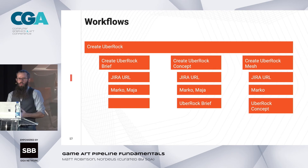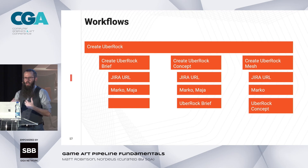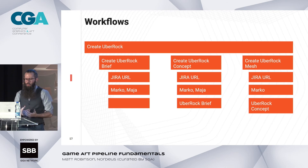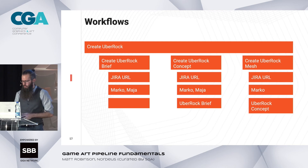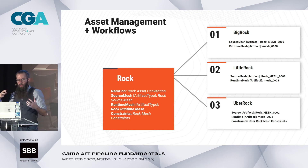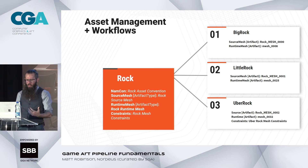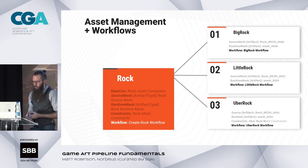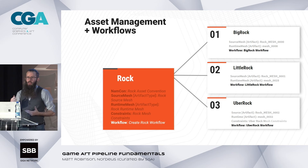Here's how we would create the uber rock. We say 'I want a new asset, it's going to be called uber rock.' All of this stuff gets created automatically because we know the workflow. In this case, Marco and Maya are doing design brief review. Marco and Maya are also doing the concept review. And Marco is doing the review for the mesh itself. Asset management is the hub for all of these systems — we add naming convention, source mesh, runtime mesh, constraints, and now a workflow. We can look at this and say 'I want a new rock' and the system creates all files automatically, creates all tasks automatically, and figures out who those tasks could be assigned to.